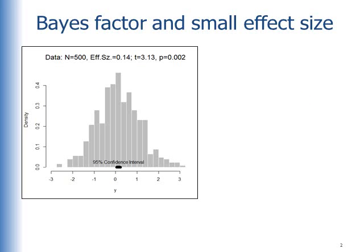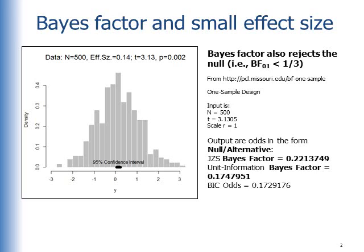Let's see what the Bayes factor does with the small effect size. Here are the data presented at the very beginning of the talk. Notice the p-value is far below .05, so we'd reject the null hypothesis according to frequentist criteria. The problem was that despite rejecting the null hypothesis, there was just a tiny effect. What does the Bayes factor do? It also rejects the null.